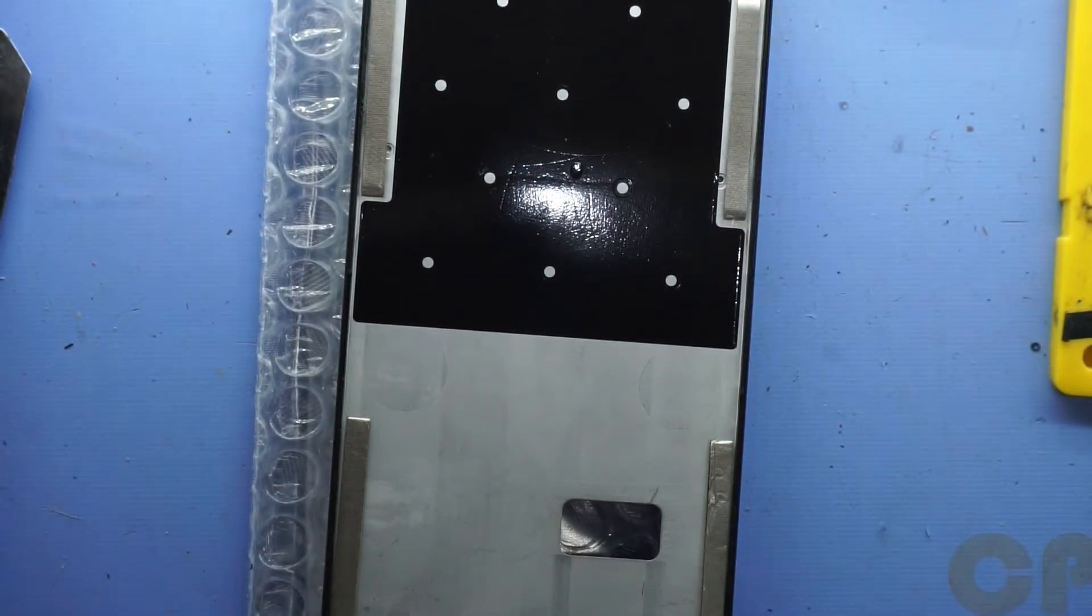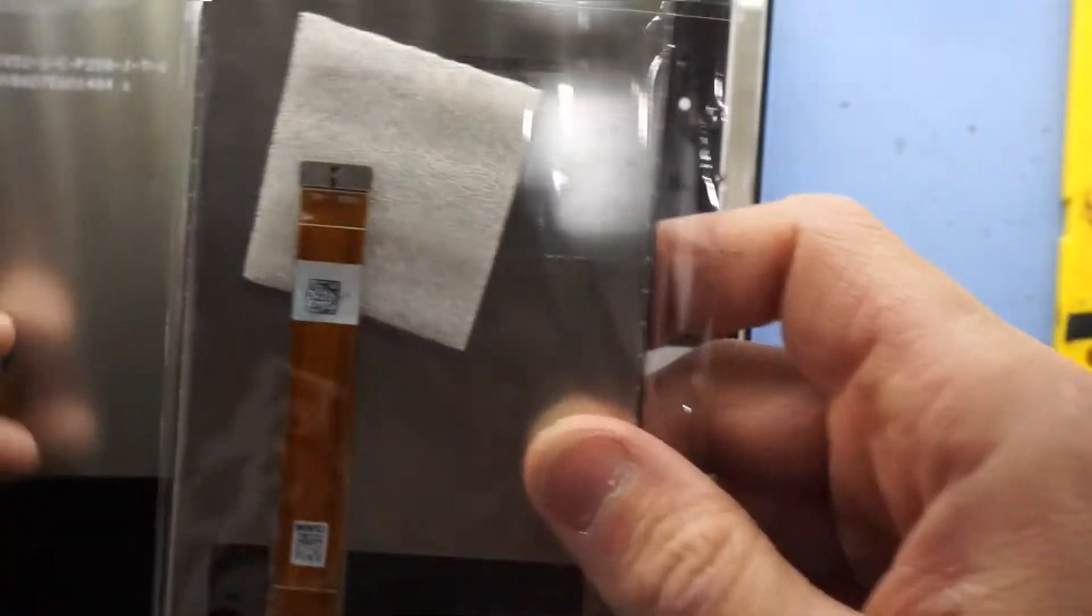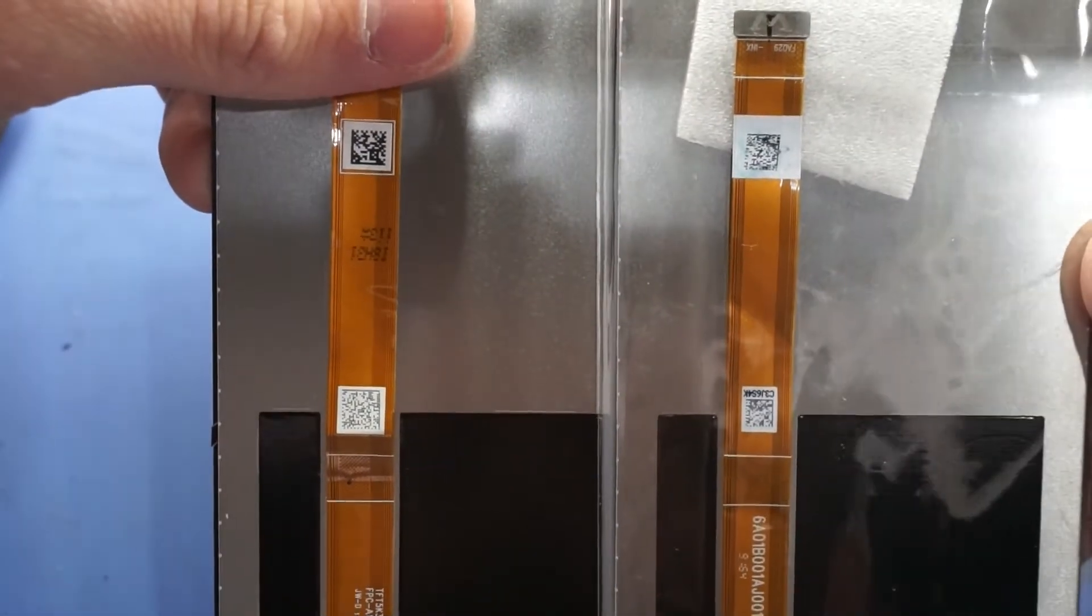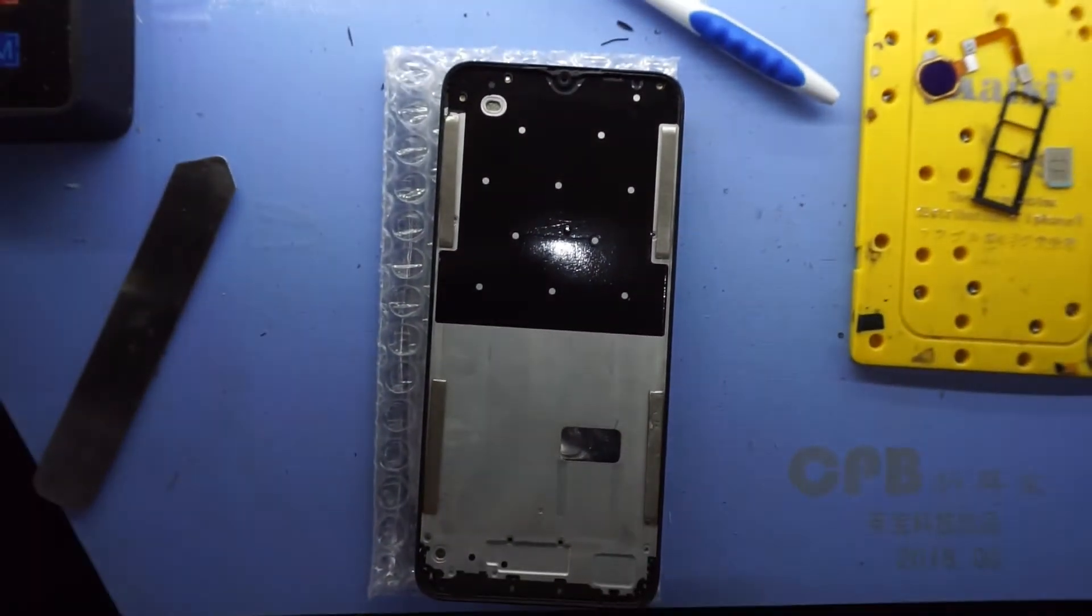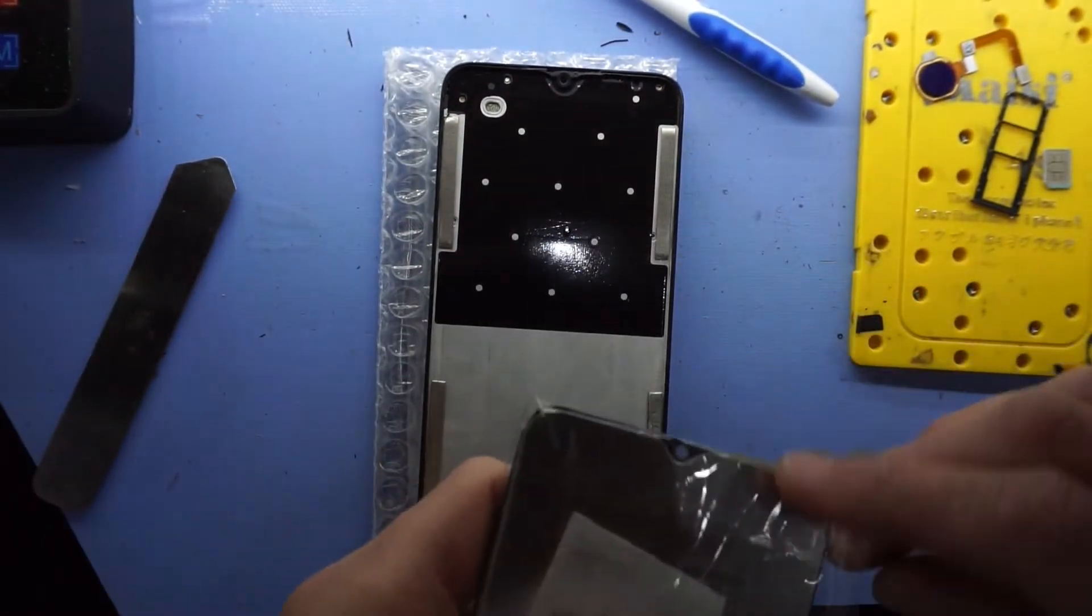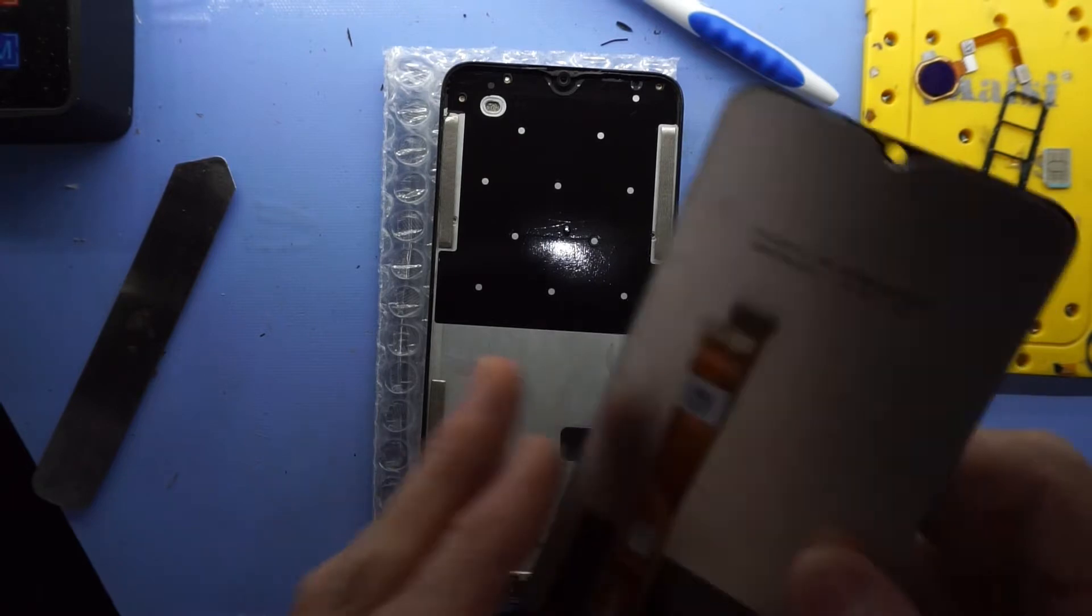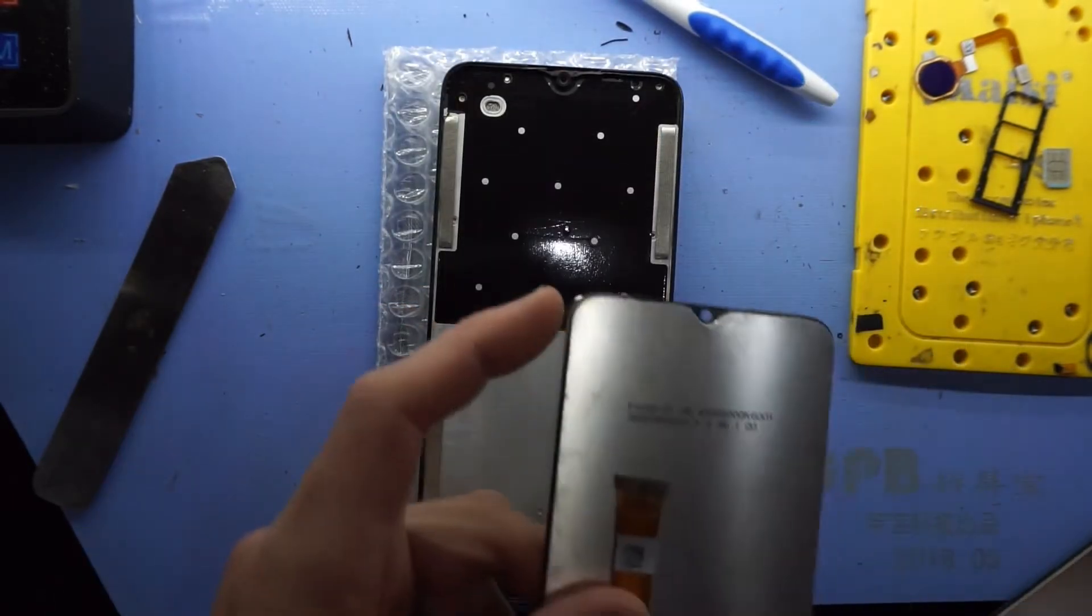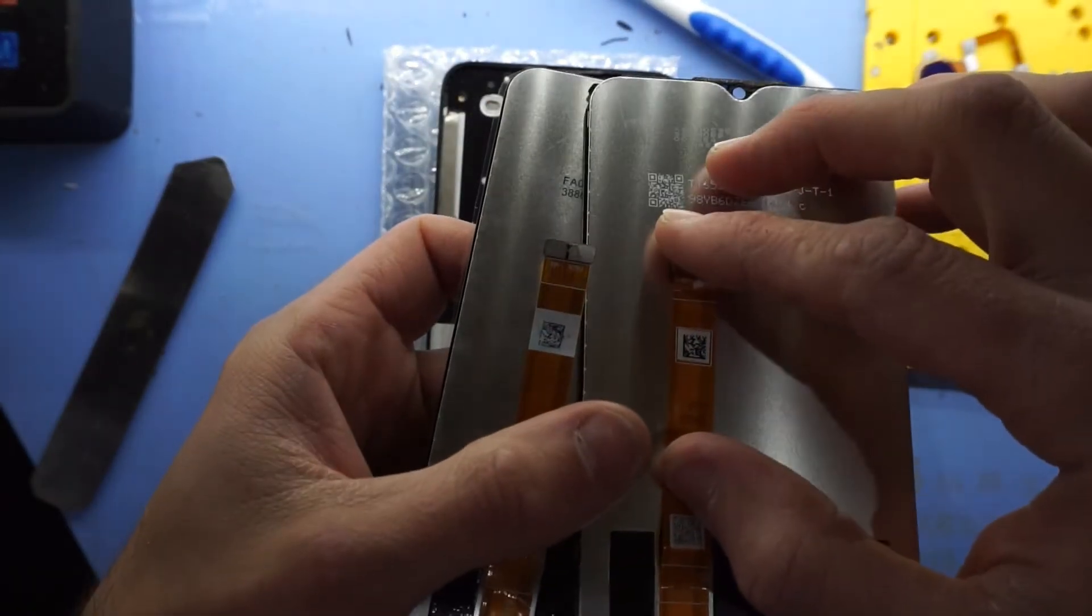So next up, compare your replacement screen with the factory one. Granted, you could do this before as well, just to make sure you've got the right model. So that's looking pretty good. So from here, we're about nearly halfway at the moment. The screen looks like a screen. Same connection. Should be okay.